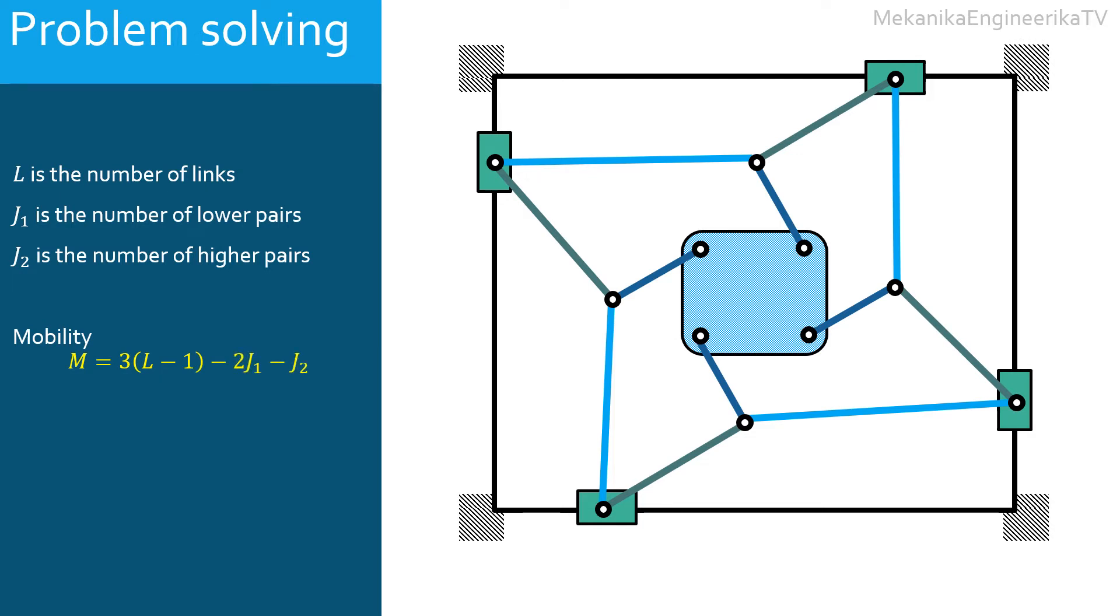This mechanism is built from the ground or the frame, a quaternary link, 4 sliders, and 12 bars. Thus, L is equal to 18.